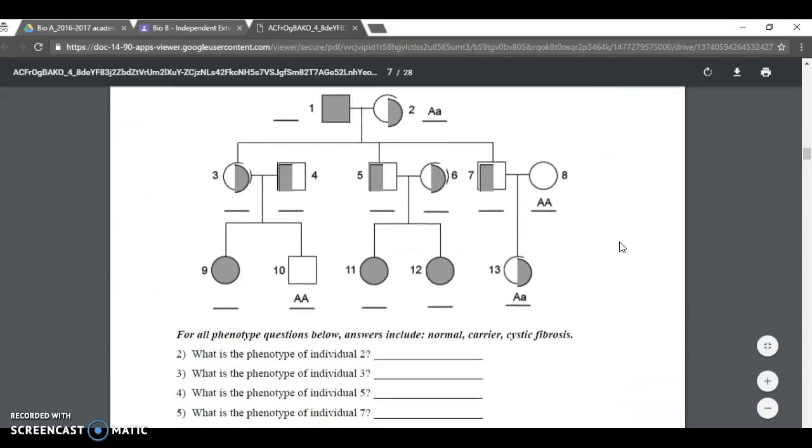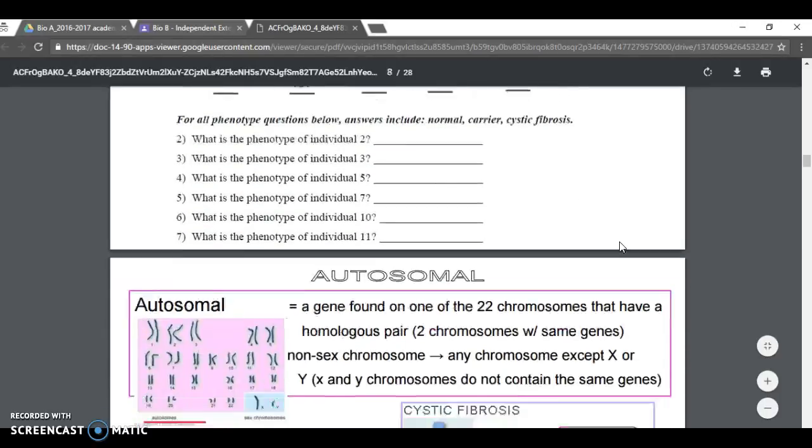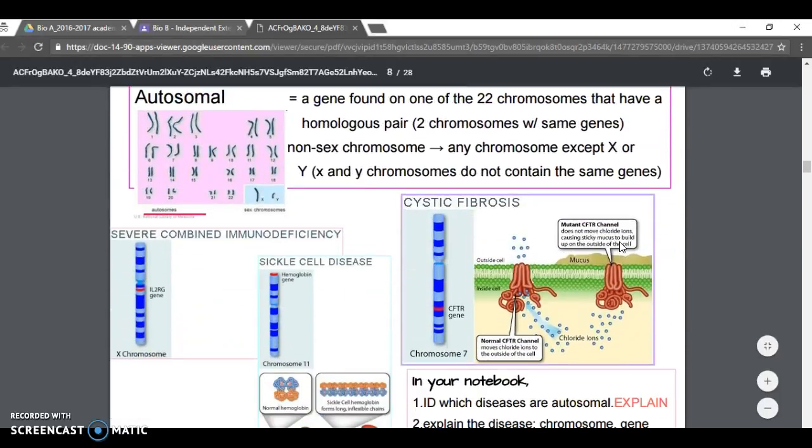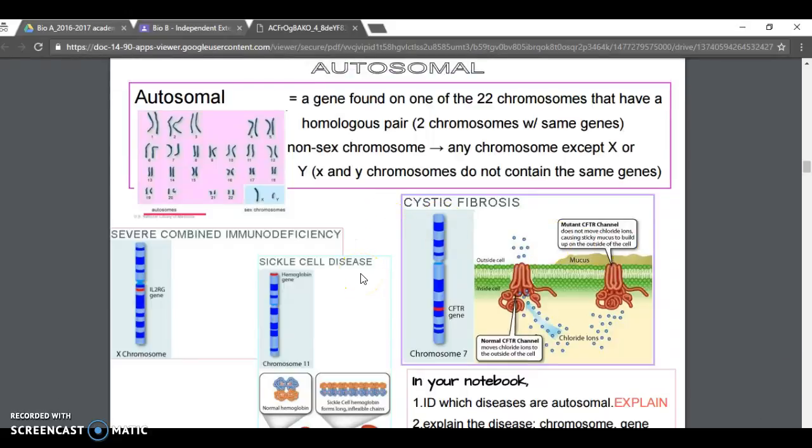This slide is a repeat, don't need to worry about it. Let's move on to this one. This is autosomal. Let's figure out what autosomal means. Autosomal basically means a gene found on one of the 22 chromosomes other than the sex chromosome.